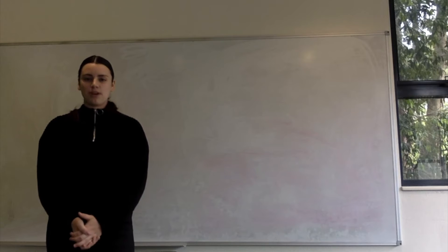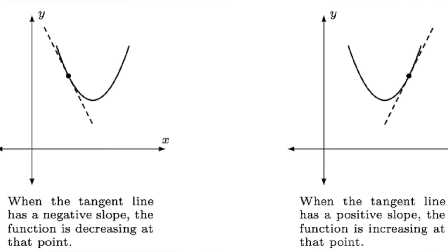If the gradient of the tangent to the graph is positive, the graph is said to be increasing. Alternatively, if the gradient of the tangent is negative, the graph is said to be decreasing.